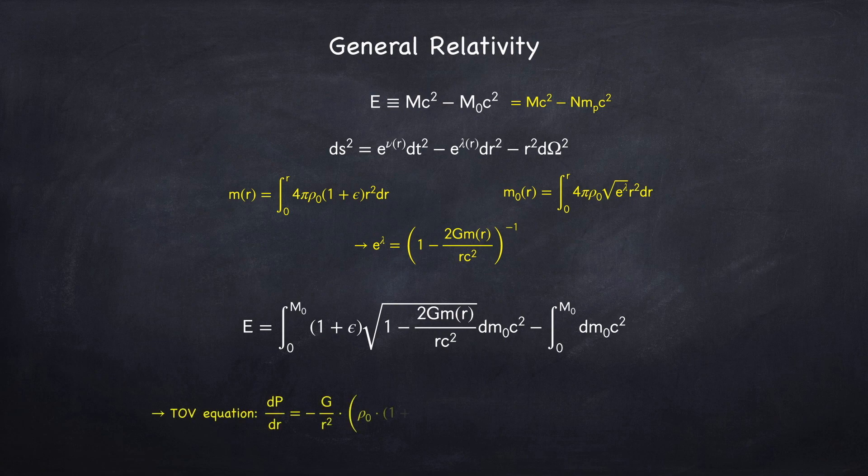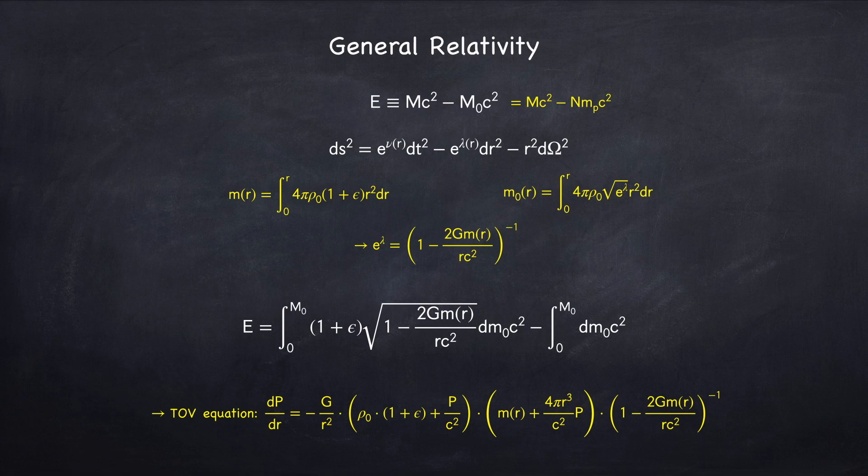This led us to the following general expression for the binding energy in general relativity. We also found in stellar physics 3c the general relativistic equation for hydrostatic equilibrium, which is called the ToV equation.